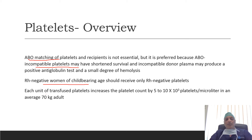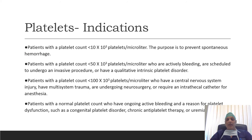Each unit of transfused platelets increases the platelet count by 5,000 to 10,000. In terms of indications of platelet transfusion, they are mainly divided into four. First, patients with a platelet count less than 10,000, where the purpose is to prevent spontaneous hemorrhage even if the patient is not bleeding. Second indication is when the patient has a platelet count less than 50,000 who are actively bleeding, scheduled for an invasive procedure, or have a qualitative intrinsic platelet disorder.